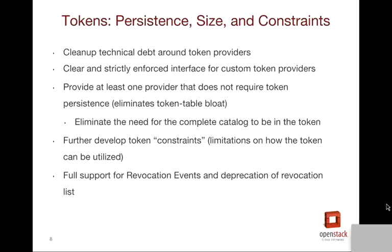We are looking to eliminate the need for the complete catalog to be in the token. This has mostly been done within Juno. At this point, it is making sure that all projects and client libraries properly support the session class, and that will take care of being able to determine the catalog without needing to encode it directly in the token. During the Kilo cycle, we expect to also have full support for token constraints — a limitation on how tokens can be utilized, such as requiring an X.509 client certificate or Kerberos or other forms of authentication when interacting with an endpoint. We are also looking to move away from the token revocation list and to fully support revocation events, which will lighten up the amount of data stored in Keystone relating to tokens.